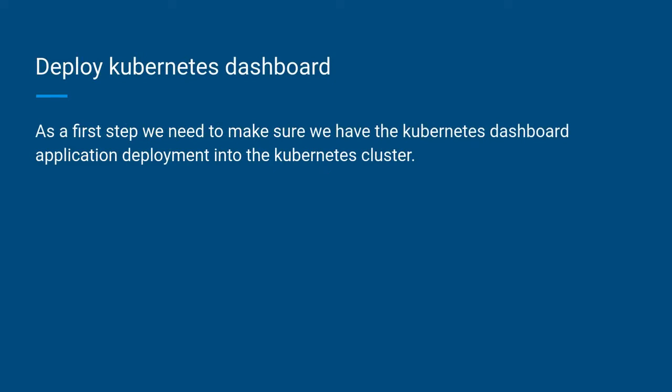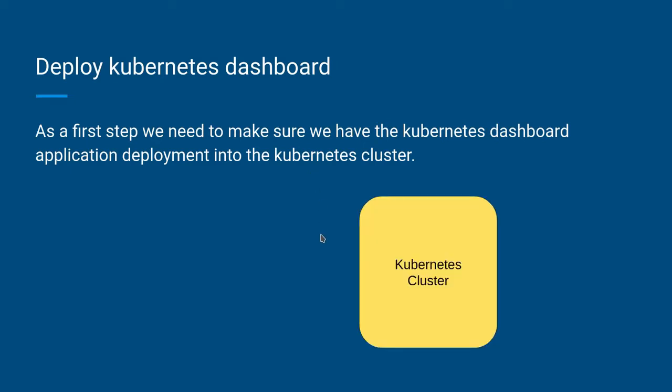The first and foremost thing is, once we have the Kubernetes cluster up and running, we need to have the Kubernetes dashboard application installed on our server. The Kubernetes dashboard YAML definition can be obtained directly from the Kubernetes documentation. You can go there, download the YAML definition, and install the Kubernetes dashboard — nothing needs to be changed in that YAML definition. This is our Kubernetes cluster, and we are going to install the Kubernetes dashboard onto it.